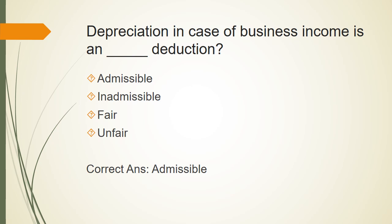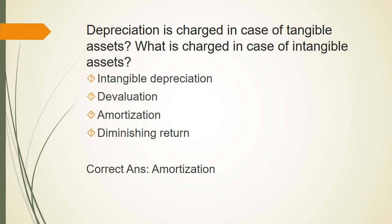Depreciation in case of business income is an admissible deduction. The word 'deduction' is used in this ordinance for expenses. Depreciation is admissible, meaning you can deduct it from your income during income calculation. Depreciation is charged in case of tangible assets (which can be touched). For intangible assets — such as patents, goodwill, trademarks, and licenses — the term used is 'amortization,' referenced under Section 24 of the Income Tax Ordinance.